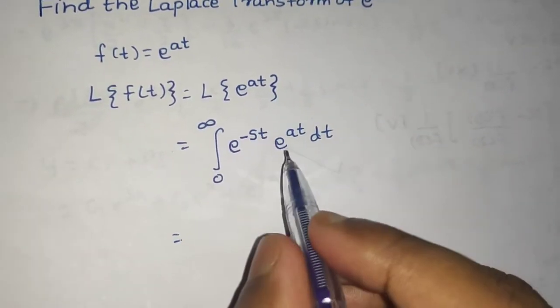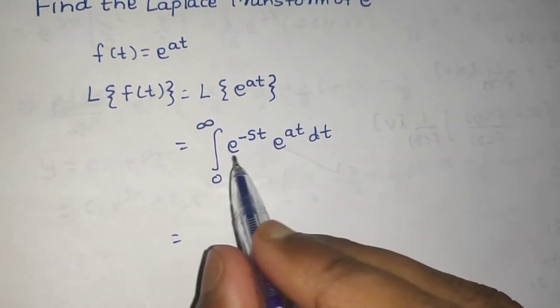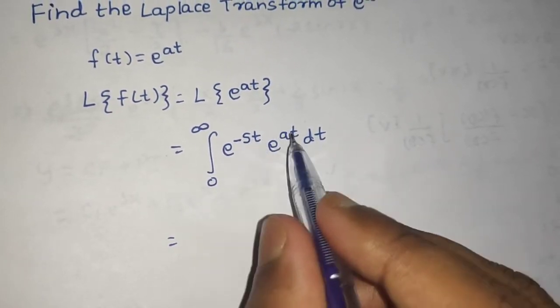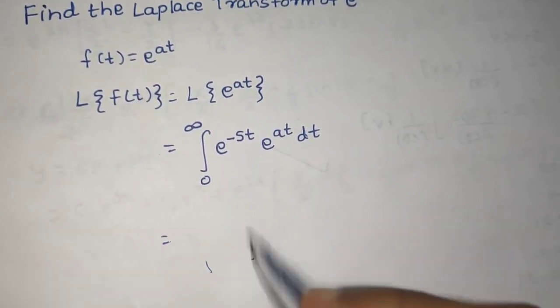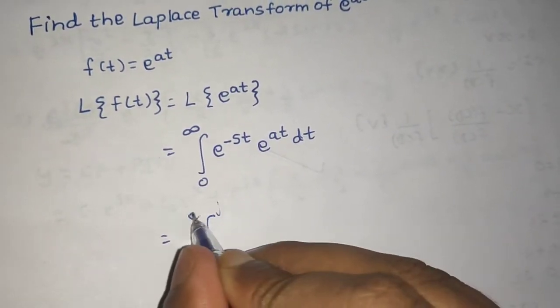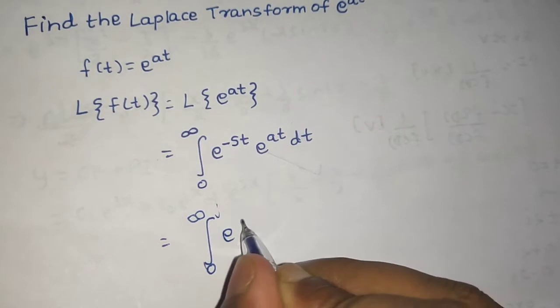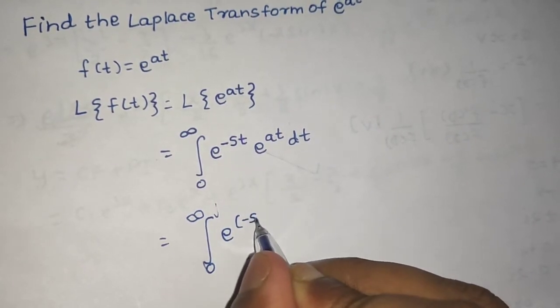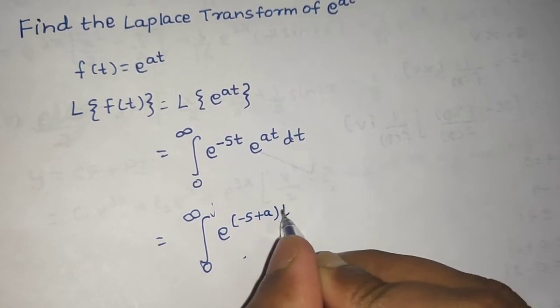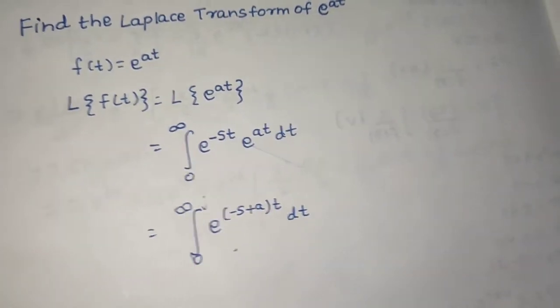Now, because the base is same and they are in product, so we can add whatever the power is there. So, 0 to infinity e power minus s plus a times t dt.